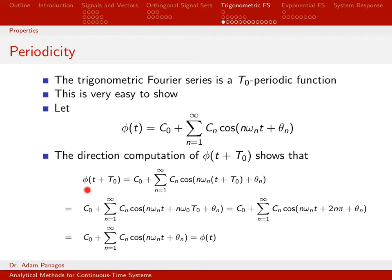Let's evaluate what phi at time T plus T-naught is. So that means take every T on this equation and replace it with T plus T-naught. The T that was there originally has been replaced with T plus T-naught. I can go ahead and distribute this right here. So that becomes N omega T, N omega T-naught.